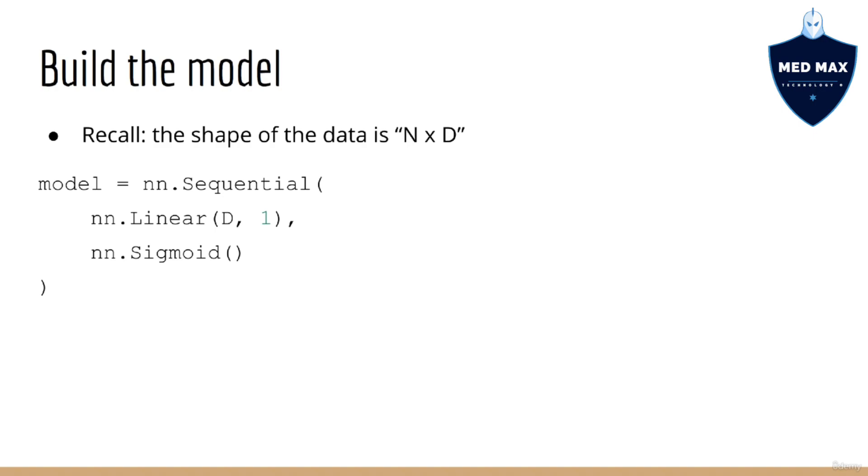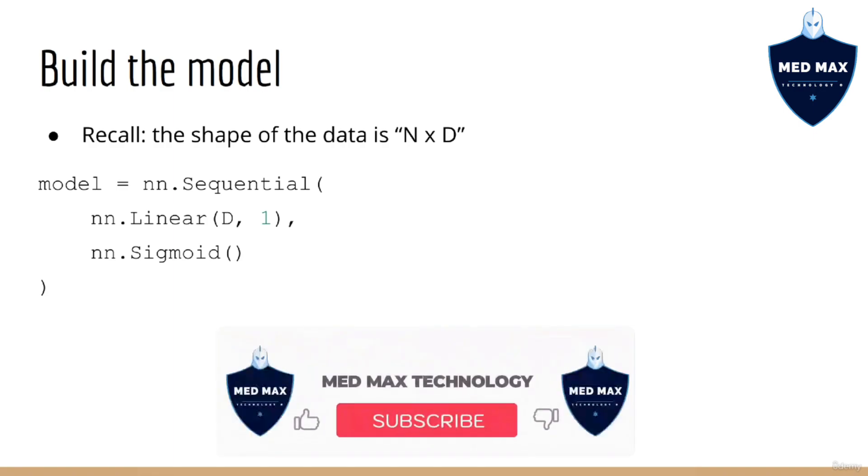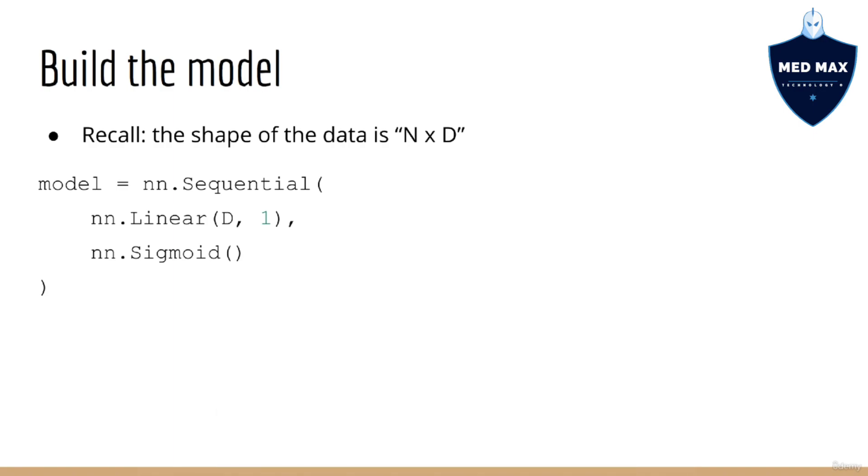Once we've prepared our data, it's time to build a model. As you know, the linear classifier is almost the same as linear regression, just with one extra step: the sigmoid. This should be a hint that we're still going to have a linear object somewhere in the model.